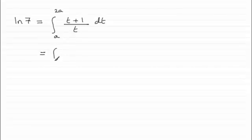So what we've got then is the integral going from a to 2a of t divided by t, which is 1, and then plus 1 divided by t.